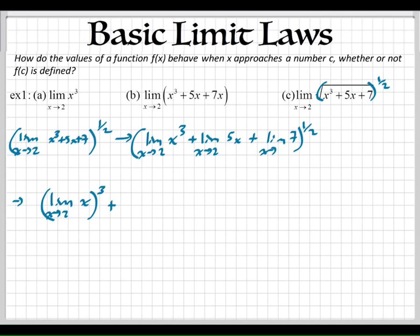So, the next one, we're going to take the 5 out of the limit because that's a factor that you can take out of the x. So, we just have x in the middle or x in the limit. And then we have the last one. We can't really change. That one's just going to stay the same. 7. And then at the end, we're going to raise everything to the 1 half power.